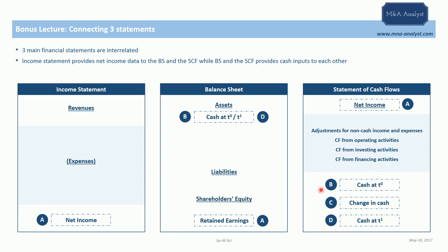Now we're going to focus on C: the change in cash. The statement of cash flows is also linked to the balance sheet through the cash item. As we calculate the net change in cash over a given financial period and add or subtract it from the cash at the end of the previous financial period (B), we get the cash at the beginning of the following financial year. We link this D item into the balance sheet for the following period.